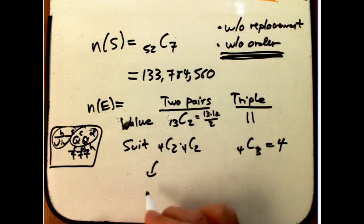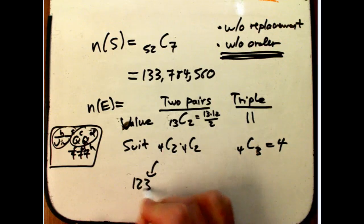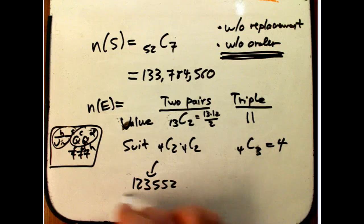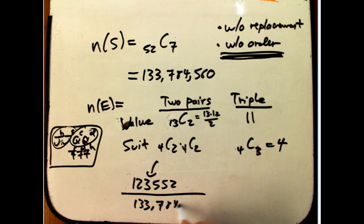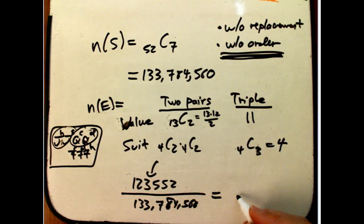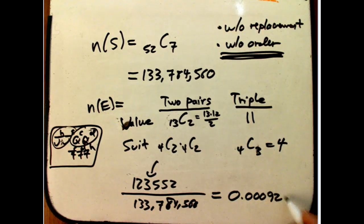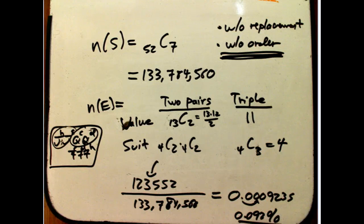So, when I multiply all those guys together, I turn out to get 123,552. I just did that calculation already. And then divide by, to get the probability, the 133,784,560. And I get 0.0009235. Or, in other words, if I move that over, 0.092%. Not very big. So, less than one out of 1,000 hands are going to be a super full house in this funky game of seven card poker.